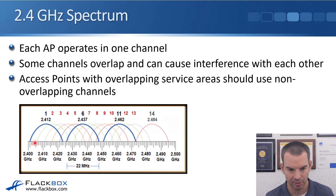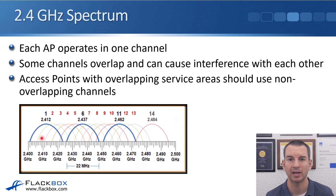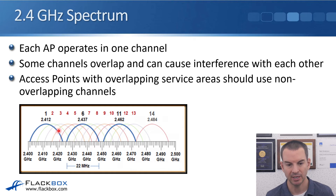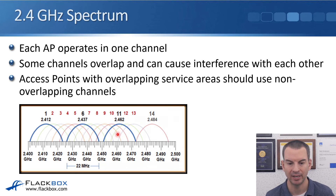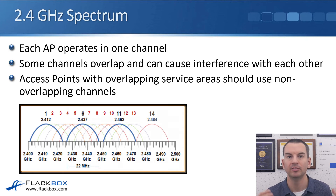You can see that channel 1 is shown in blue, and channel 2 overlaps significantly with it. Channel 3 is overlapping as well. It's not until channel 6 that there is no overlap with channel 1. So in the 2.4 GHz spectrum in the US, there are only three channels which do not overlap with each other: channels 1, 6, and 11. If you have neighbouring APs, you want to use these non-overlapping channels to avoid interference.